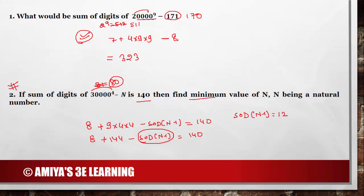So 12 should be the minimum sum of digits of n minus 1. Can we get a single digit whose summation is 12? No. Can we get a double digit? Yes. Can we get summation 12 starting with 1? No. Starting with 2? No. Starting with 3? Yes — we can get 39. So 39 is the minimum value of n minus 1, and n should be nothing but 40. So 40 is the least number.